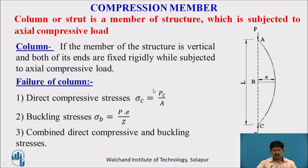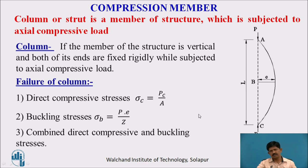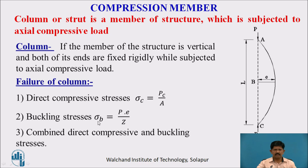When the column is a short column — when the length divided by the least lateral dimension is less than 12 — it is treated as a short column and fails generally by direct compressive stress, given by sigma_c equals P_c divided by A. Whereas for a long column, if length divided by least lateral dimension is greater than 12, it is called a long column and generally fails by buckling stress, where sigma_b equals P times e divided by section modulus. In between, the column may fail by the combined effect of direct compressive stress and buckling stress.